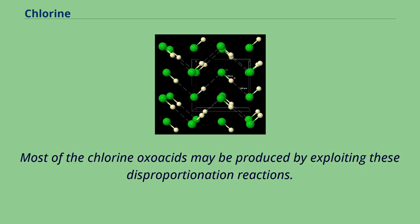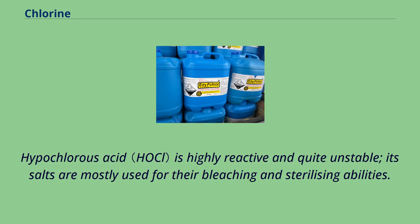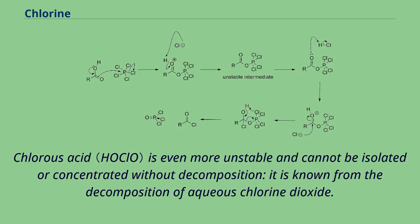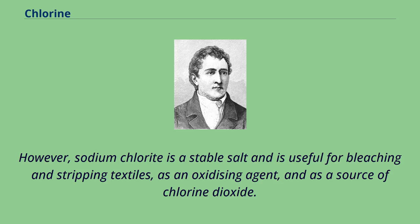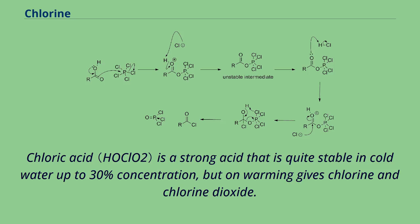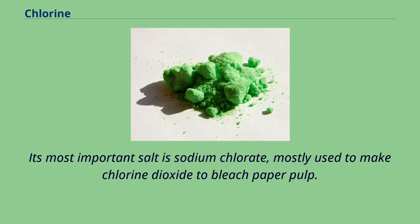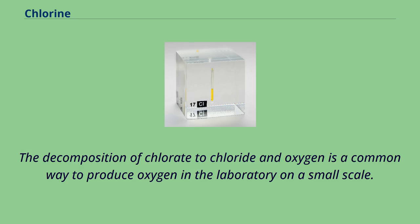Hypochlorous acid is highly reactive and quite unstable; its salts are mostly used for their bleaching and sterilizing abilities and are very strong oxidizing agents, transferring an oxygen atom to most inorganic species. Chlorous acid is even more unstable and cannot be isolated or concentrated without decomposition; it is known from the decomposition of aqueous chlorine dioxide. However, sodium chlorite is a stable salt and is useful for bleaching and stripping textiles, as an oxidizing agent, and as a source of chlorine dioxide. Chloric acid is a strong acid that is quite stable in cold water up to 30% concentration, but on warming gives chlorine and chlorine dioxide. Evaporation under reduced pressure allows it to be concentrated further to about 40%, but then it decomposes to perchloric acid, chlorine, oxygen, water, and chlorine dioxide. Its most important salt is sodium chlorate, mostly used to make chlorine dioxide to bleach paper pulp. The decomposition of chlorate to chloride and oxygen is a common way to produce oxygen in the laboratory on a small scale.